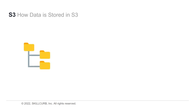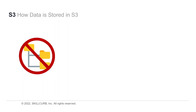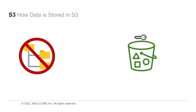It's a common misconception that files are stored in S3 the same way we find them on our computer systems — in a file hierarchy. This is not the case. Instead, files follow a flat URL namespace where each object has its own unique key. On a computer, a file would be located at a path like C:/user/home/desktop/file. But in S3, the file would have a unique URL: bucket-name.s3.amazonaws.com/unique-key.